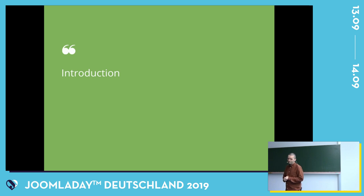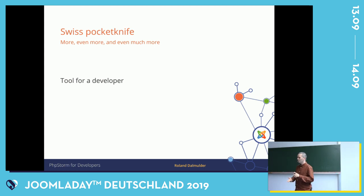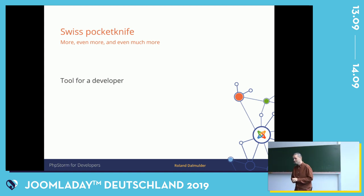The biggest problem was switching to PHPStorm because I was so used to my Eclipse environment. But then in one project, there were quite a few developers using PHPStorm, so I committed to using it for one month. That was four or five years ago. That month is still going because I never went back. And especially now, PHPStorm has a lot of Joomla support, which is one of the things I'll be sharing today.